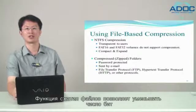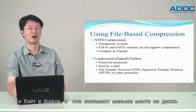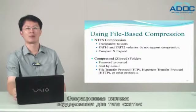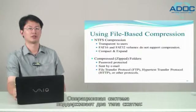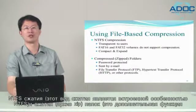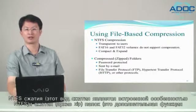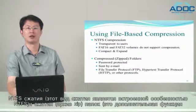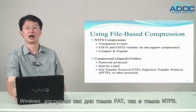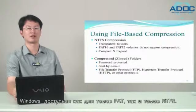File-based compression allows you to reduce the number of bits and bytes in files so that they use less space on a disk. The Windows operating system supports two types of compressions: NTFS compression, which is a built-in feature of NTFS, and compressed zipped folders, which is an additional feature of Windows available on both FAT and NTFS volumes.